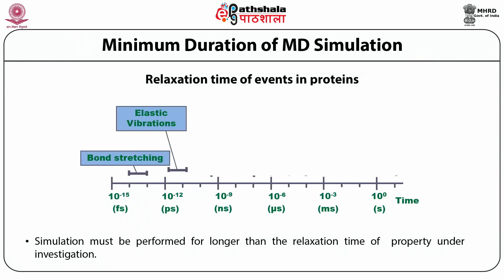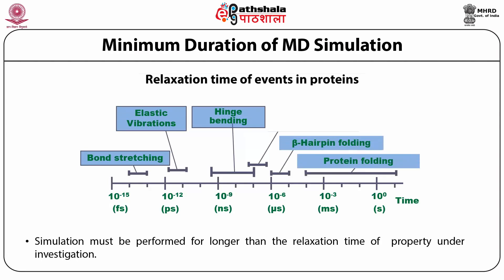What should be the minimum duration of MD simulations? Ideally, the simulation must be performed for longer than the relaxation time of the property under investigation. Hinge bending in proteins has relaxation times in the nanosecond range. Secondary structure formation like alpha-helix or beta-hairpin requires microsecond durations. Complete folding of a protein requires simulations from a few milliseconds to several seconds.